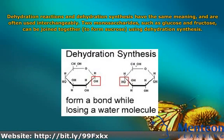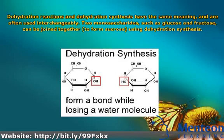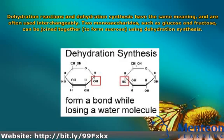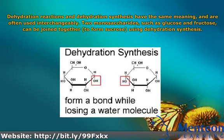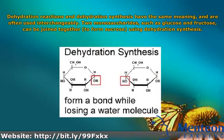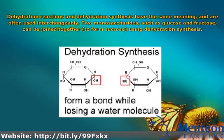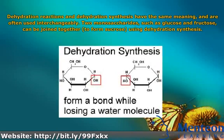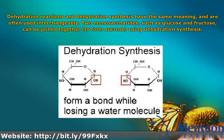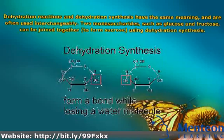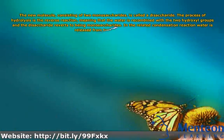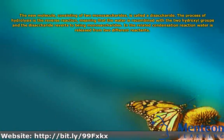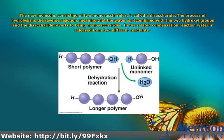Two monosaccharides, such as glucose and fructose, can be joined together to form sucrose using dehydration synthesis. The new molecule, consisting of two monosaccharides, is called a disaccharide.